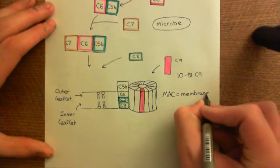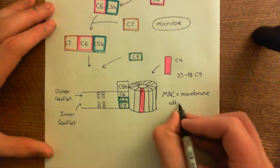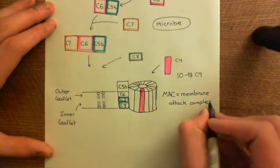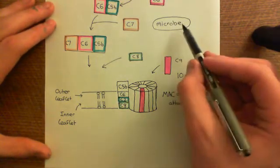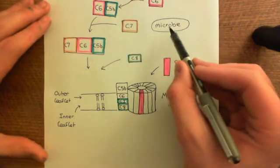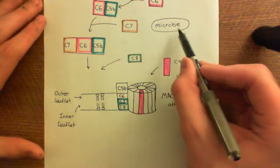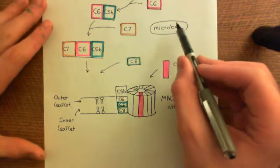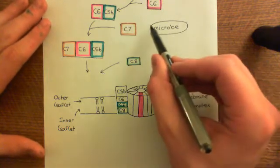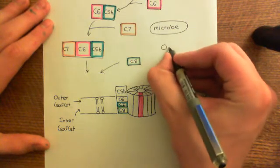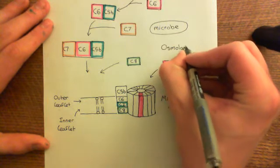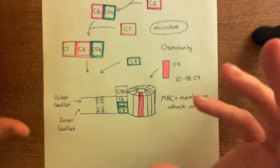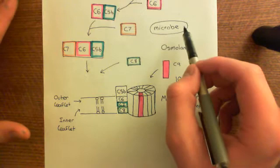Now, what does this membrane attack complex do? Well, basically, it destroys the integrity of the cell membrane, and this is deadly for the microbe. Basically, if we have our microbe here, in the cytoplasm of the microbe, the concentration of solute is much higher than the concentration of solute in the extracellular fluid. So the osmolarity, which just means how much stuff is dissolved in the cytoplasm, is much higher in the cytoplasm. Well, sorry, osmolarity doesn't specifically mean how much is dissolved in the cytoplasm. It just means how much is dissolved in any fluid. It's just a measure of how much solute you've got dissolved in a fluid.